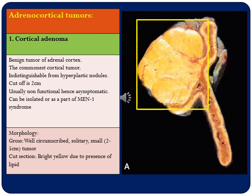Starting with adrenocortical tumors — first is cortical adenoma. It is a benign tumor of the adrenal cortex and is the most common tumor of the cortex. It is indistinguishable from hyperplastic nodules both grossly and microscopically. The cutoff arbitrarily taken to differentiate hyperplastic nodules from cortical adenoma is two centimeters: less than two centimeters is called a hyperplastic nodule, and more than two centimeters is labeled adrenal cortical adenoma. These adenomas are usually non-functional and hence asymptomatic.